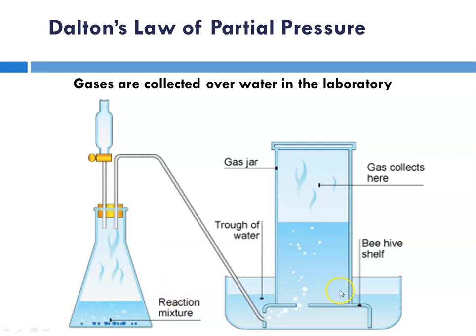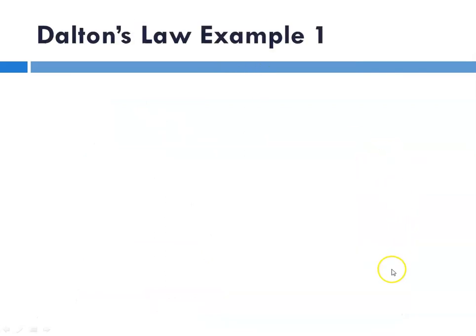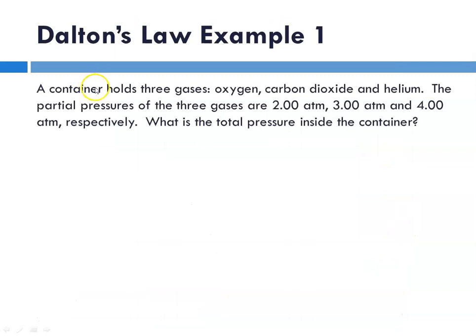So now I thought what we would do is solve a couple of Dalton's Law problems. So Dalton's Law Example 1. The container holds three gases, oxygen, carbon dioxide, and helium, and the partial pressures of the three gases are 2 atm, 3, and 4. What is the total pressure inside the container? So let's identify variables.